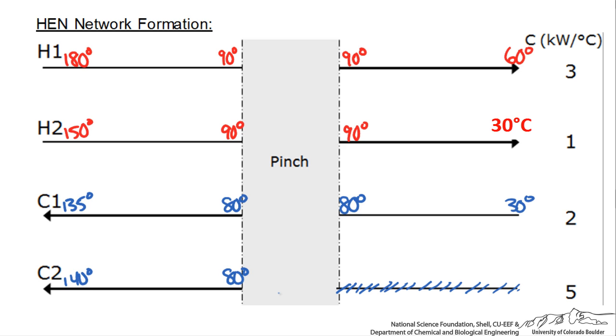If we start with the hot side of the pinch, we want to match two streams such that CC is greater than or equal to CH. In that case, if we matched C2 we can match it with either H2 or H1, since in both cases our value of 5 is greater than the values for the hot streams.